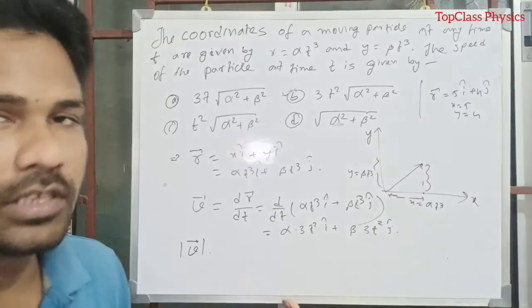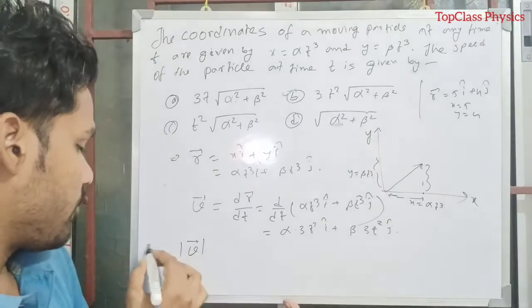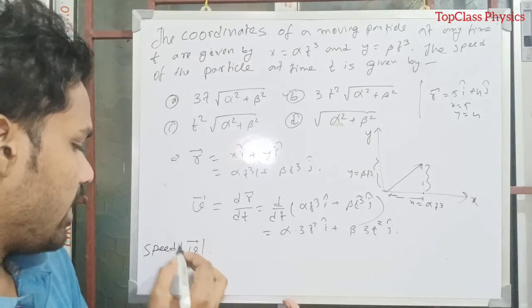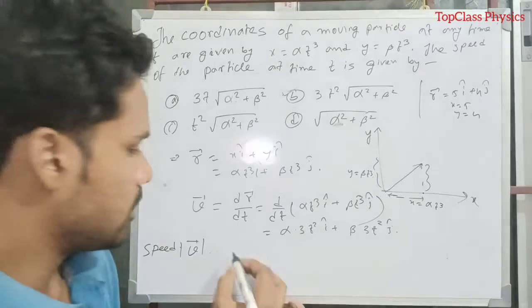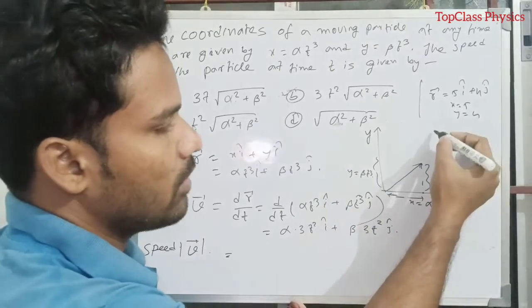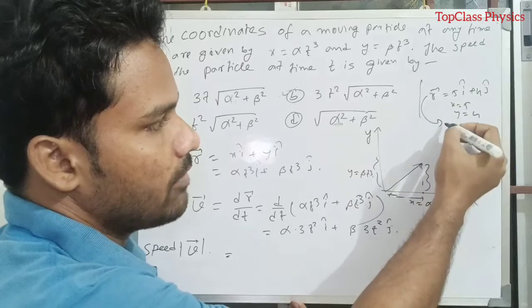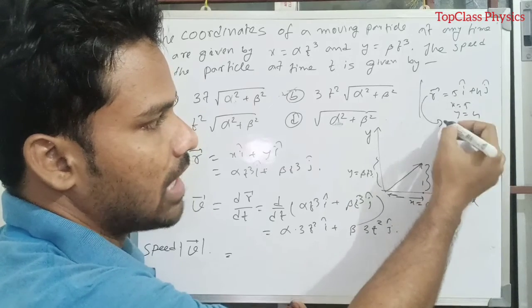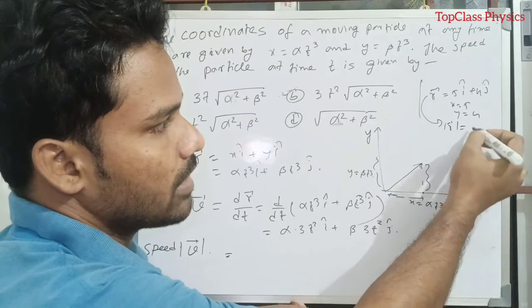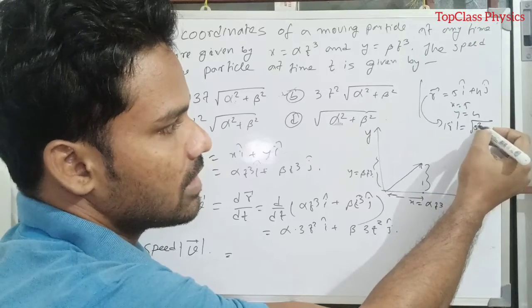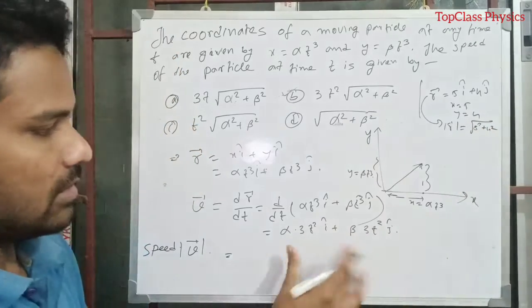So what is speed? Speed means magnitude of velocity. There is no direction for speed, only find the magnitude of the velocity. Whenever we are going to find velocity magnitude, that means root over of this squared plus that squared.